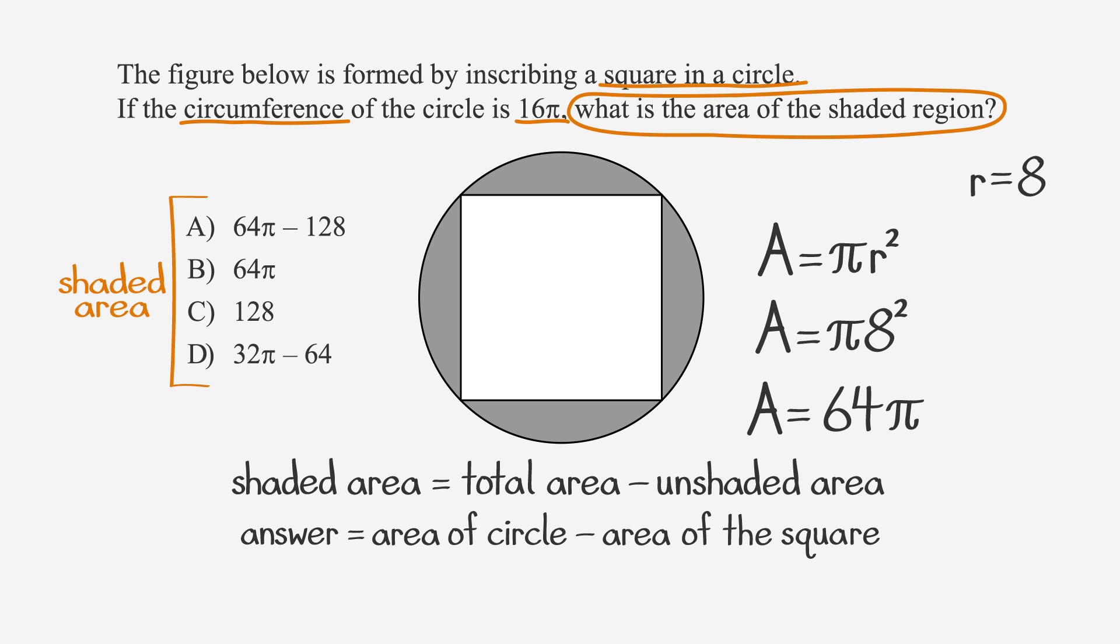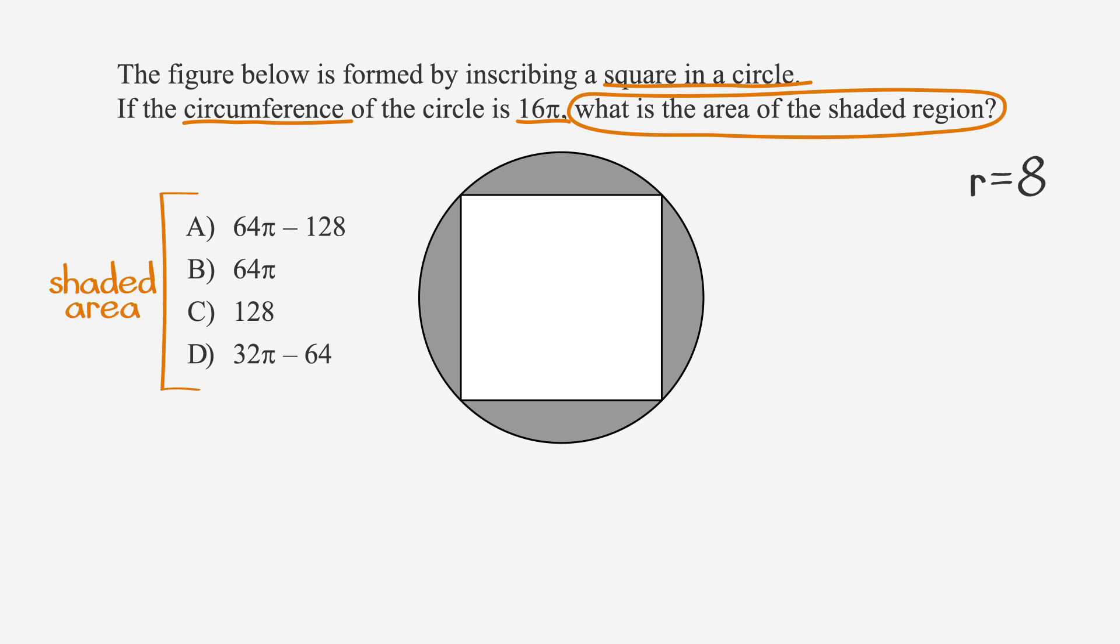Now we can plug back into our subtraction equation. So we have shaded area equals 64π minus the unshaded area. We've got a great start on this problem, but we still have several steps to get through. Stick with me as we keep going.